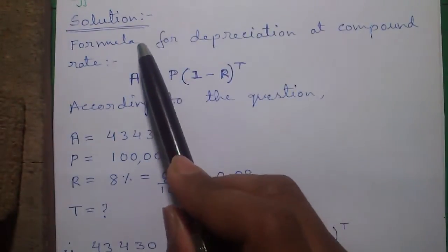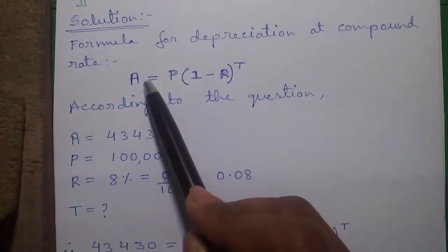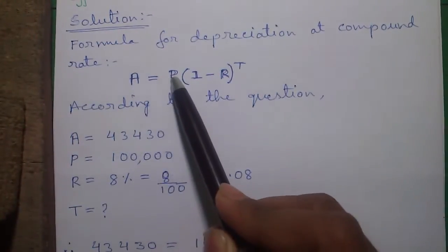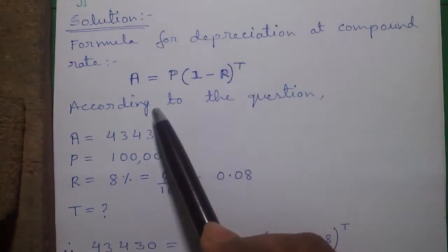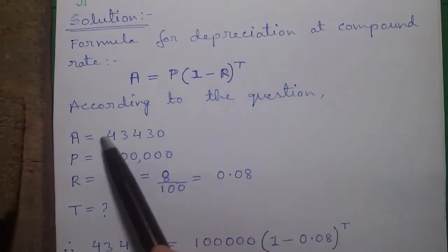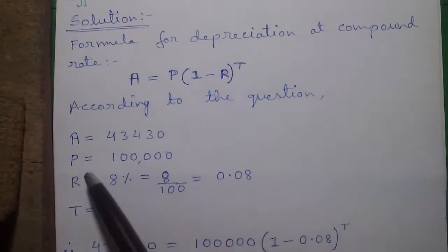So here is our solution. The formula for depreciation at compound rate is given by A equals to P into 1 minus R to the power T. And according to the question, our A or amount equals to 43,430 which is our final value.